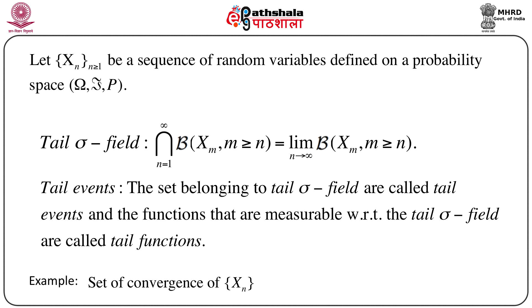Let Xn, n equals 1, 2, and so on, be a sequence of random variables defined on a probability space (Ω, script F, P), where Ω is the sample space, script F is the sigma field generated by the class of subsets of Ω, and P is the probability function defined on Ω and script F. Now we define one important thing known as the tail sigma field.